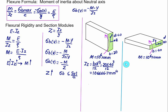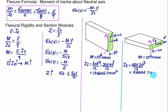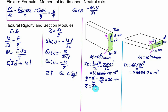For the second case, using the same formula IZ = B D cubed divided by 12, B equals 40 and depth equals 20. So we have 40 times 20 cubed divided by 12, giving IZ equal to 26,666.7 mm to the power 4. The top fiber in the first case is at distance Y equal to D/2, which is 40/2 equal to 20 mm. So section modulus Z equals IZ divided by Y, giving 106,666.7 divided by 20, which equals 5333.3 mm cubed.